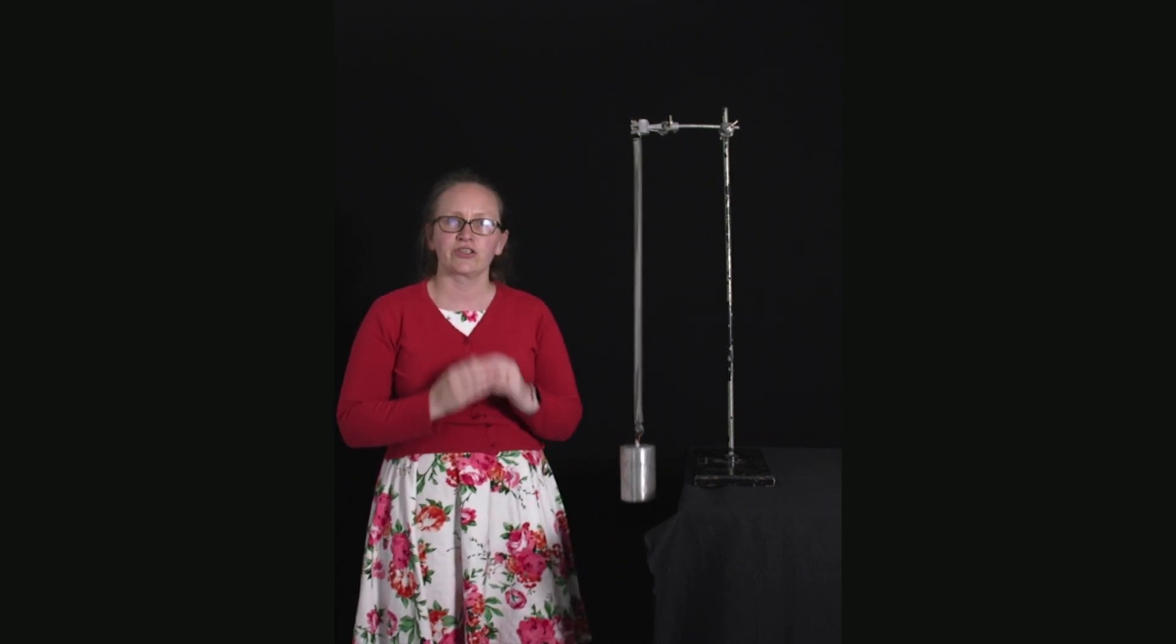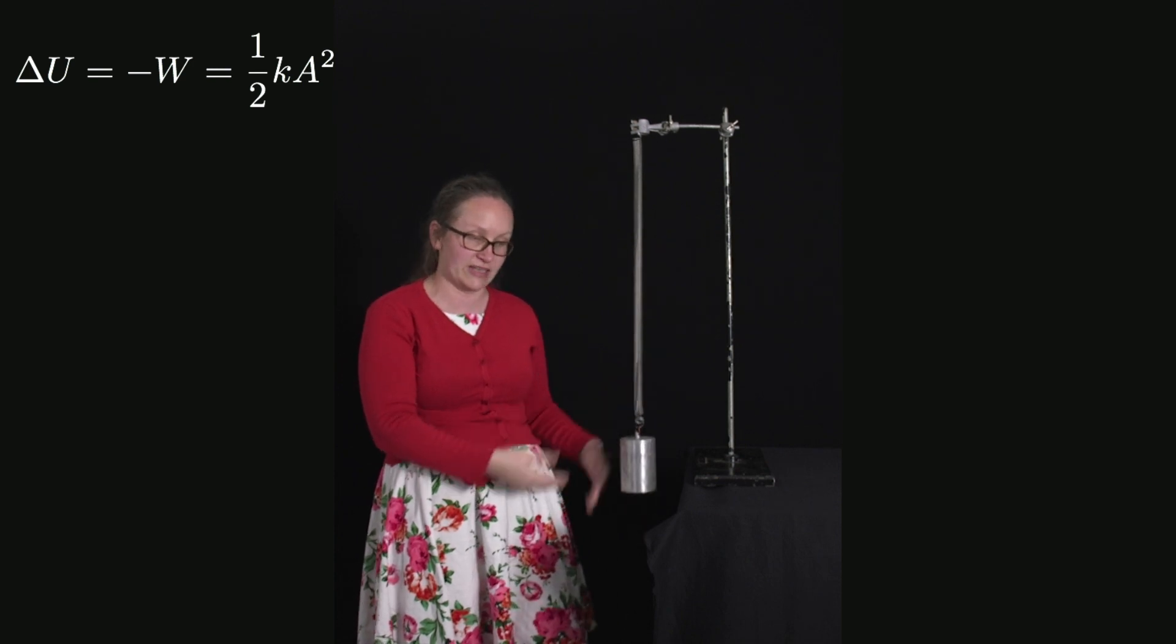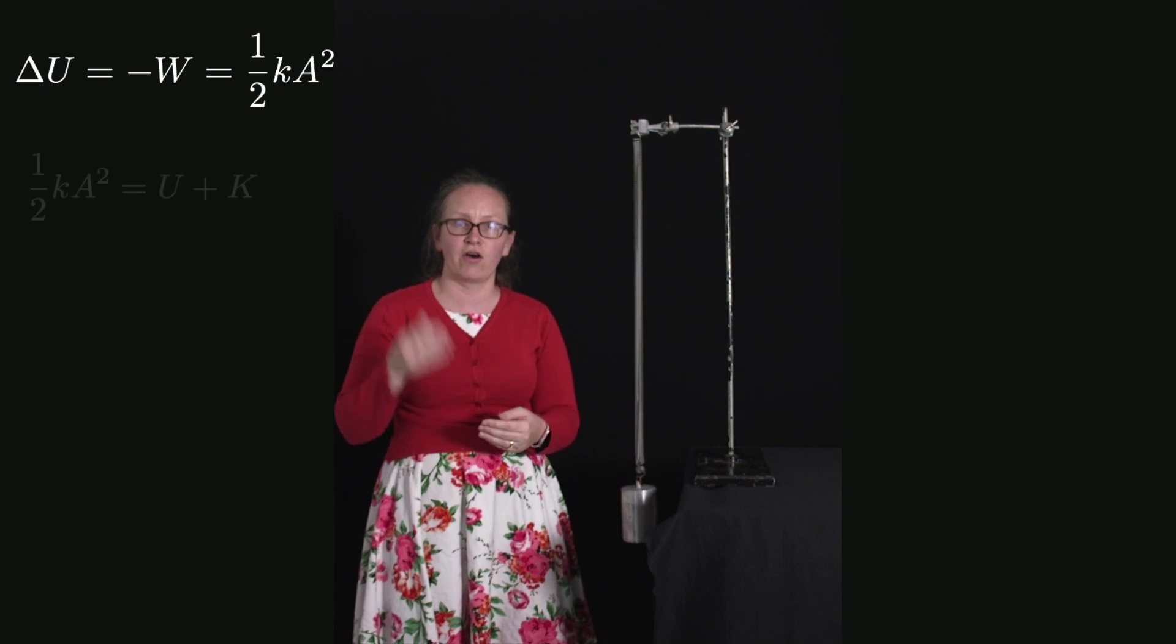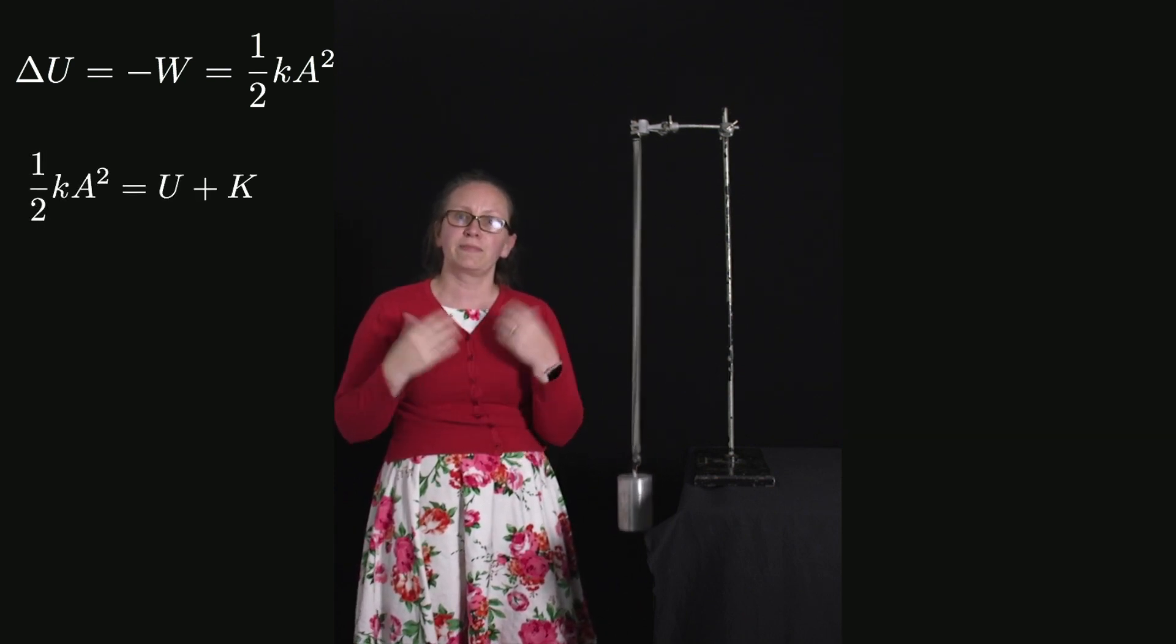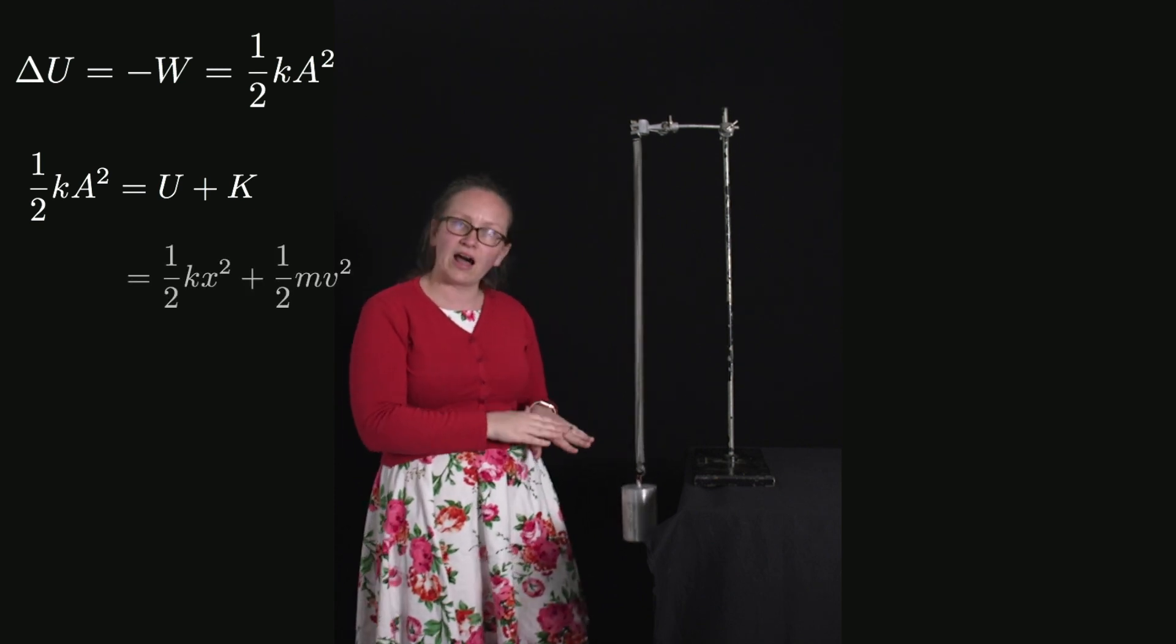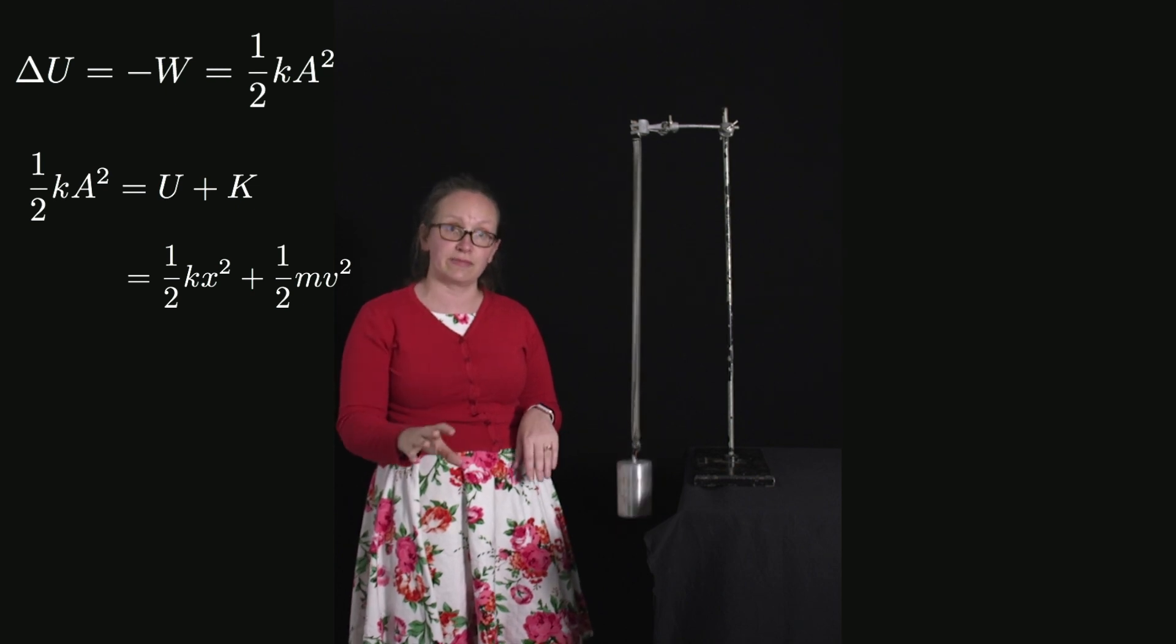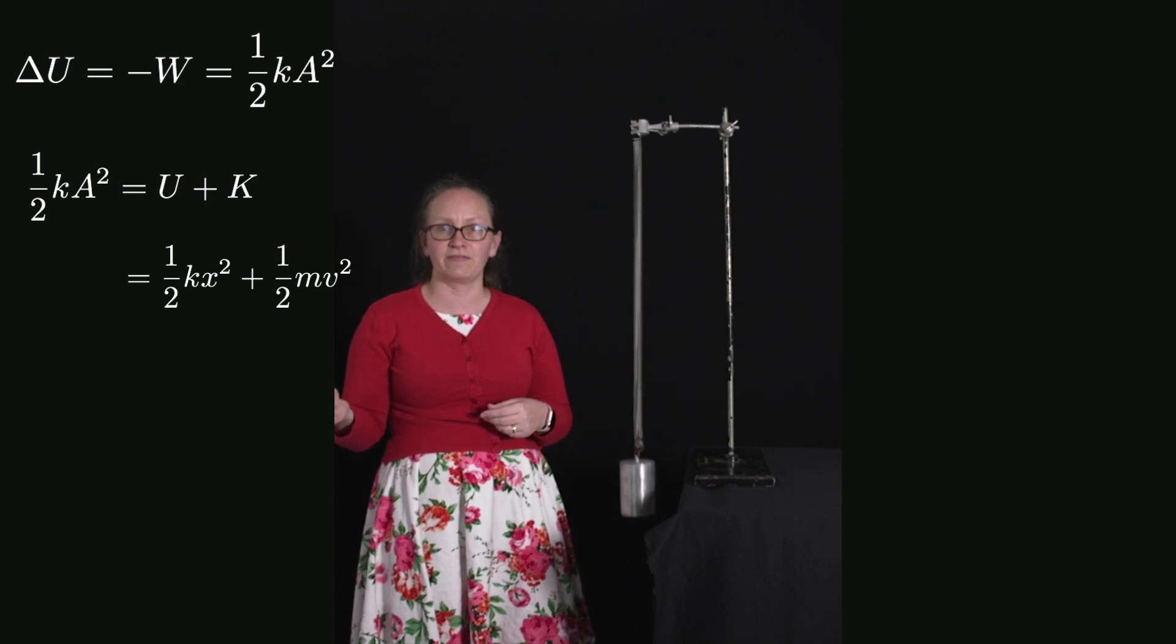Now we can use this energy conservation to calculate the speed of our mass. The total energy within the system is given by the change in the potential energy, the work done as we extend the spring, which is 1/2 k a². This is then in the form of potential U plus kinetic K. The potential is given by 1/2 k x² where x is the displacement from equilibrium, and the kinetic energy is given by 1/2 m v².